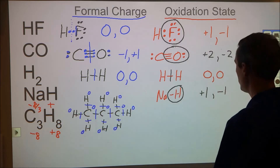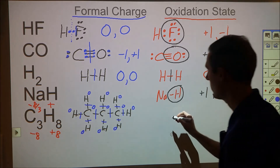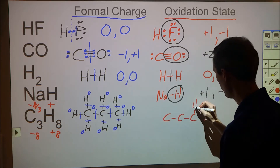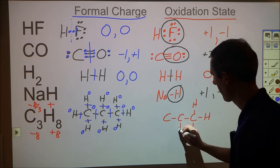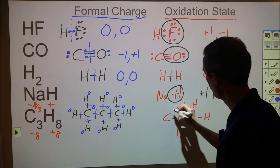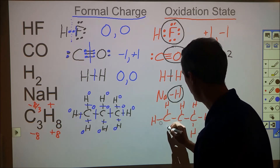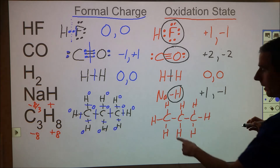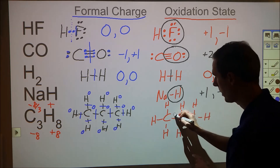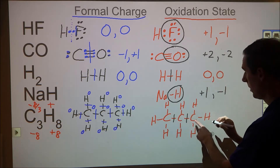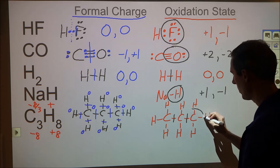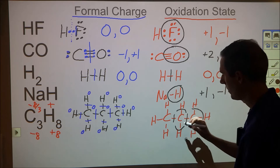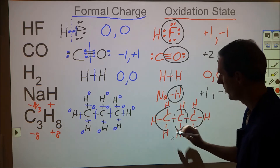For oxidation states on C3H8, we see a different picture because we assign winners and losers. Carbon–carbon bonds still split evenly. But carbon is more electronegative than hydrogen, so any carbon–hydrogen bond gives all those electrons to carbon. The end carbons each collect electrons from the C–H bonds on their side, and so does the middle carbon.